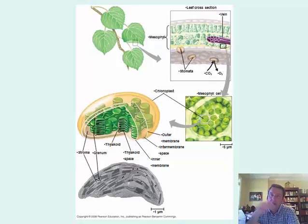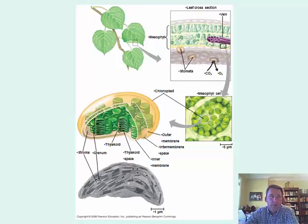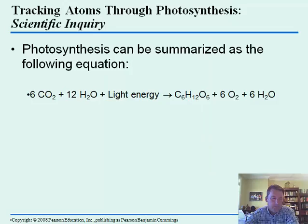Each individual coin would be a thylakoid, and that stack would be the granum — that's going to be the site for these reactions. In photosynthesis, we have a number of things that take place for the chemical reactions to proceed. As a summary: we start with simple molecules — carbon dioxide and water — plus light energy, which go through a series of steps, and the ultimate outcome is the formation of a carbohydrate molecule or sugar.